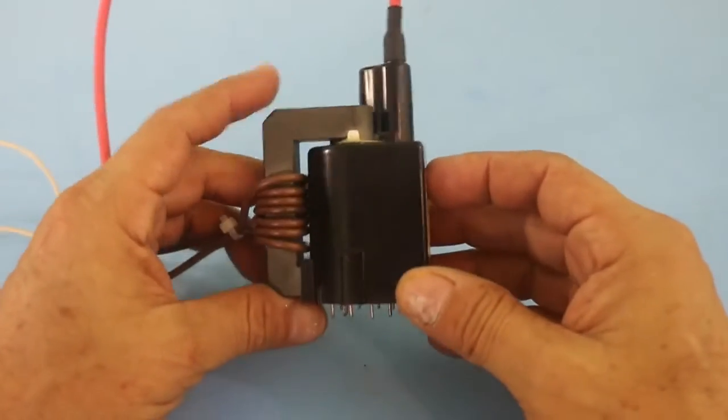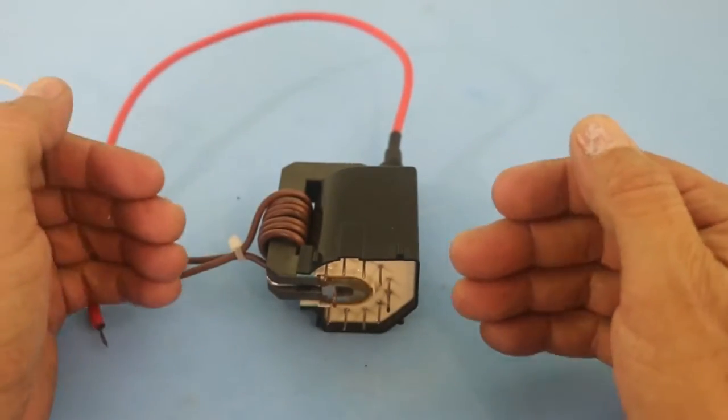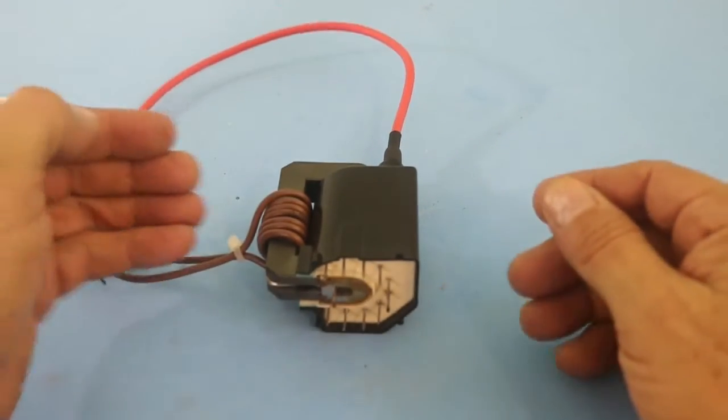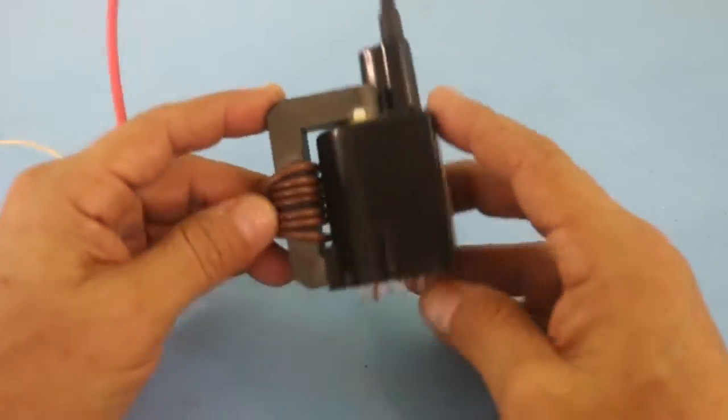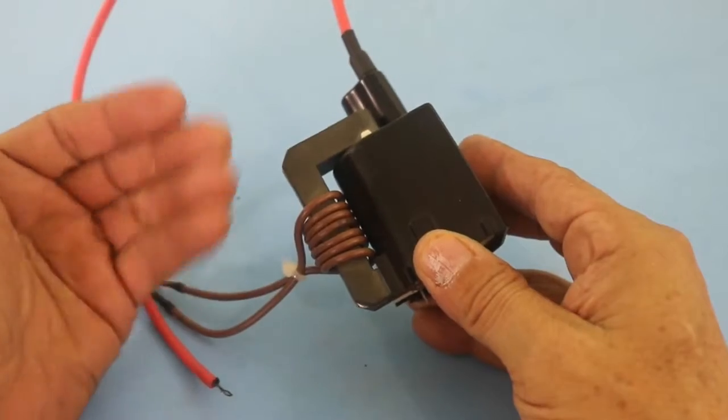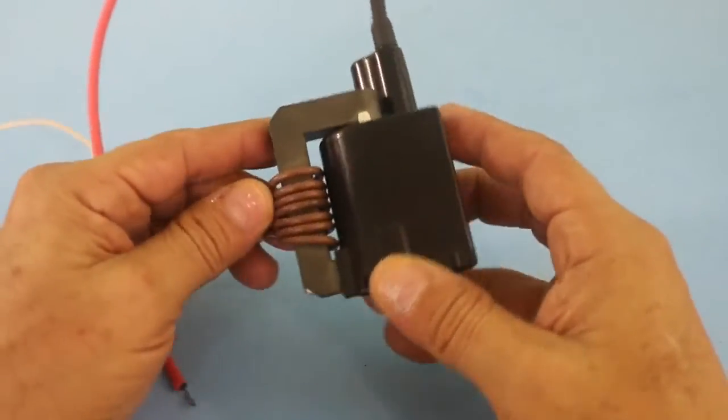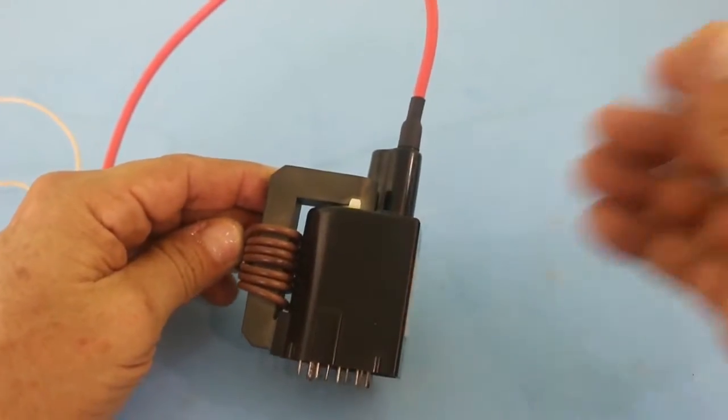And also, you do not use AC current to feed the transformer. This type of transformer needs chopped DC voltage. That is, you need DC voltage that is a train of rectangular waves.